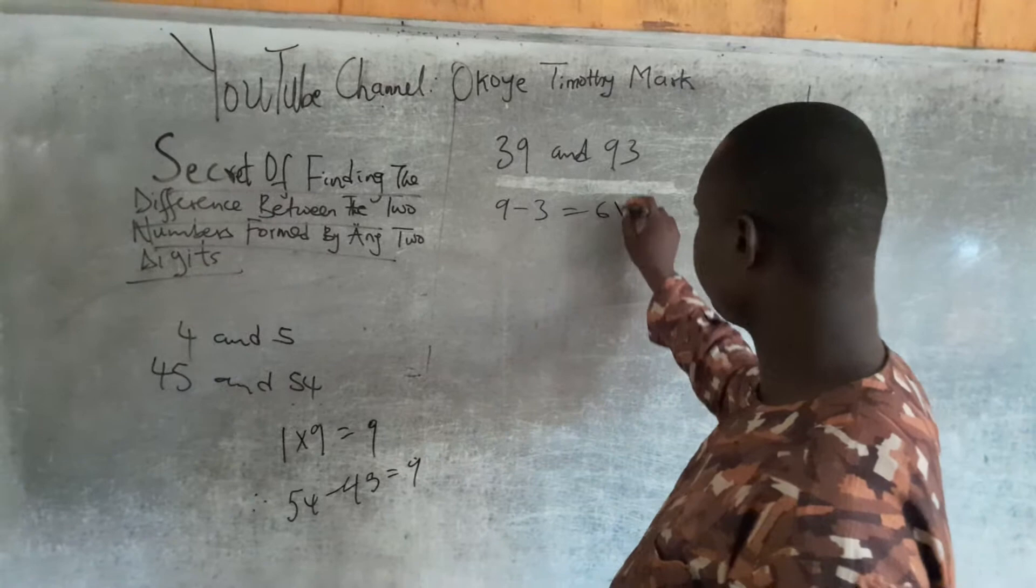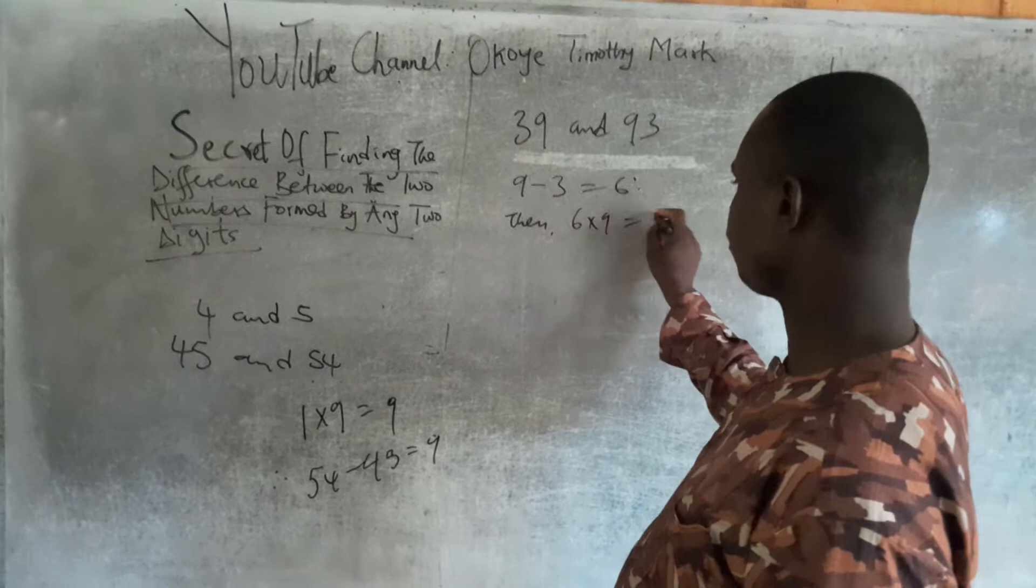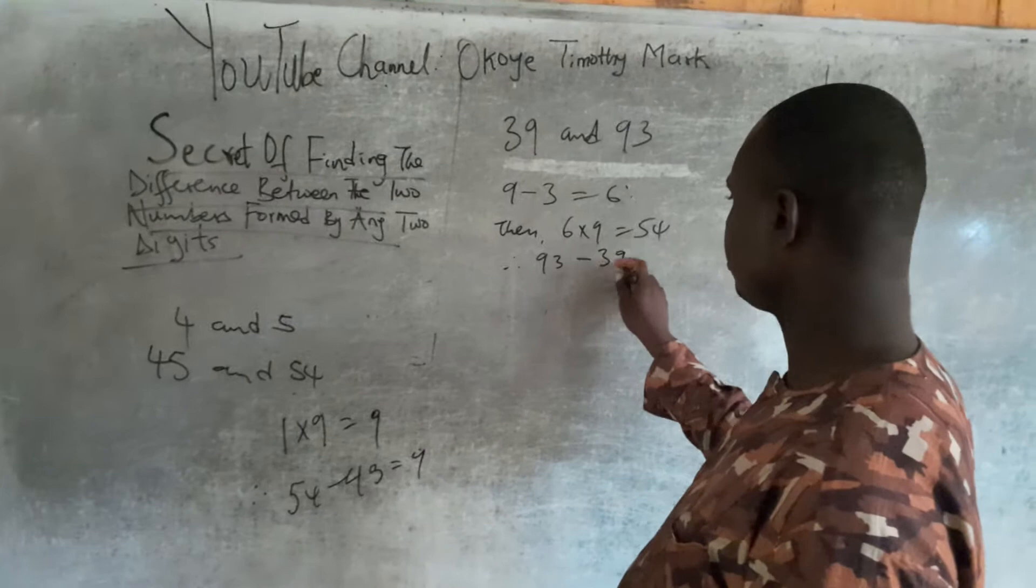Then I will multiply the 6 by 9, that is 54. Therefore, 93 minus 39 is 54.